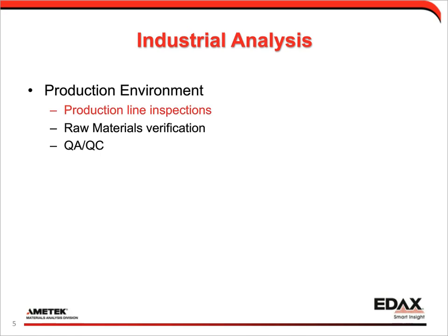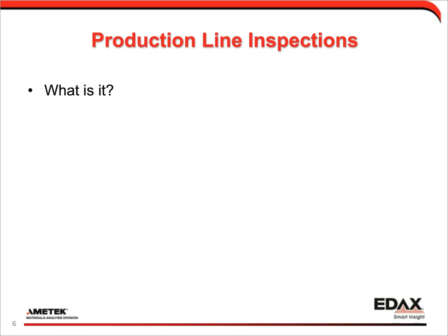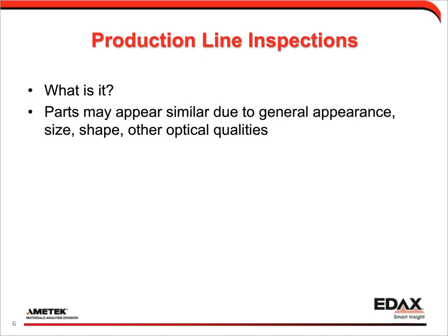Starting with production line inspections: this is not a regulated part of the manufacturing process, but rather when an analyst on the production line sees something unusual and asks, is this something I need to look at further? From visual inspection, you can look at a part with your eye, knowing it day in and day out. Something might look slightly unusual, so you look at it with an optical microscope, which gives you a low-magnification view — basically a higher mag than your eyes.